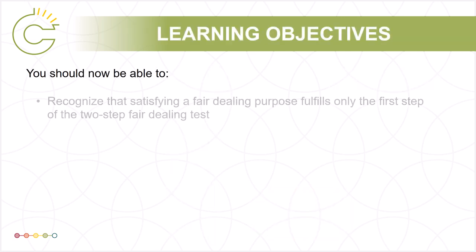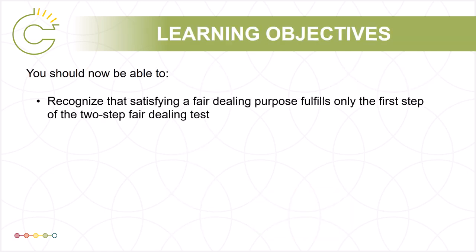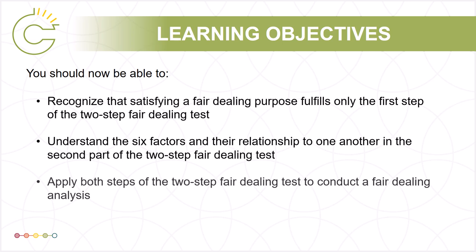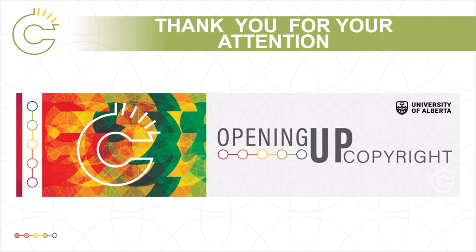You should now be able to recognize that satisfying a fair dealing purpose fulfills only the first step of the two-step fair dealing test, understand the six factors and their relationship to one another in the second part of the test, and apply both steps of the fair dealing test to conduct a fair dealing analysis. This has been the University of Alberta's Opening Up Copyright instructional module on applying fair dealing. Thank you for your attention.